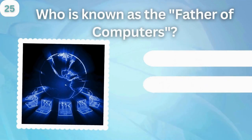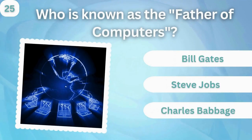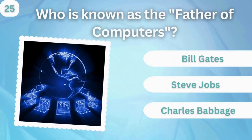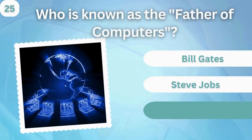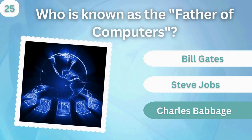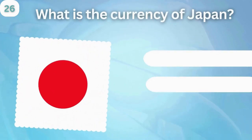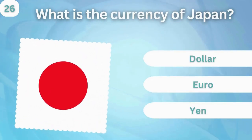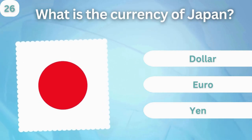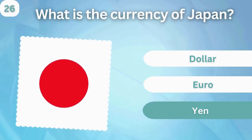Who is known as the father of computers? Bill Gates, Steve Jobs, or Charles Babbage? Charles Babbage. What is the currency of Japan? Dollar, Euro, or Yen? Yen.